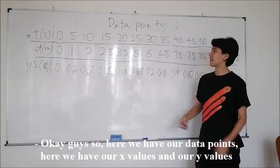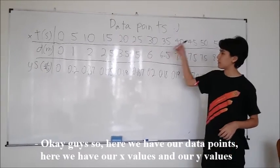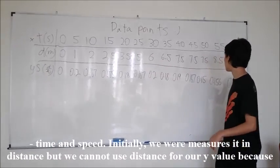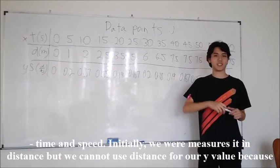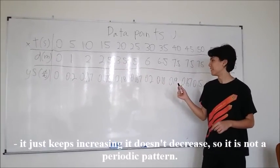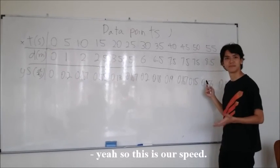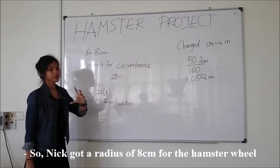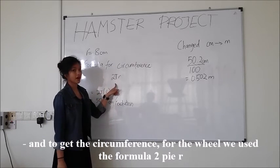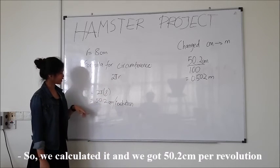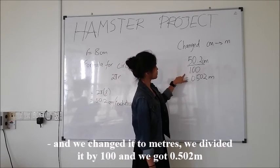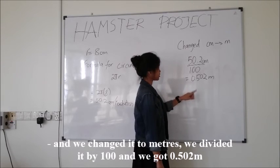Okay guys, so here we have our data points. Right? We have our x value and our y value. Right? Time and speed. Initially we measured it in distance, but we cannot use distance for our y value because it just keeps increasing, it doesn't decrease. So it's not a periodic pattern. Yeah, so this is our speed. Nick got a radius of 8 for the hamster wheel. And to get the circumference of the wheel, the formula for it is 2 pi r. So we calculated it and we got 50.2 centimeters per revolution. And we changed it to meters, so we divided it by 100 and this is what we got, 0.502 meters.